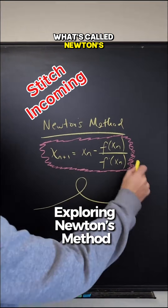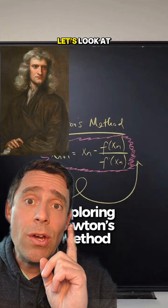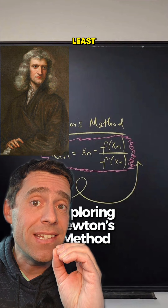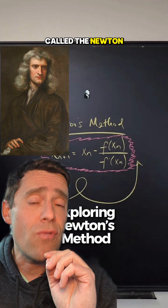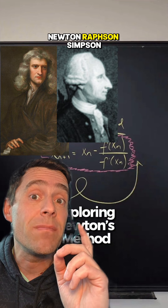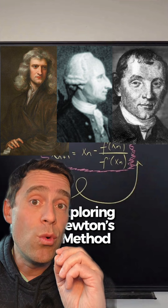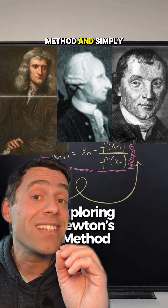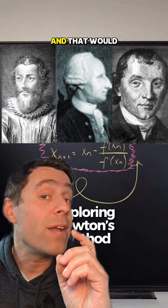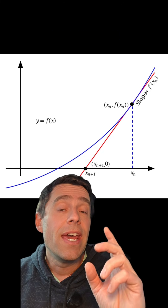Let's talk about what's called Newton's method — really, the Newton method. At the very least it should be called the Newton-Rafson method, and in fact it should be called the Newton-Rafson-Simpson method. As a matter of fact, you could completely remove Newton's name and simply call it the Viet-Rafson-Simpson method, and that would be more accurate.